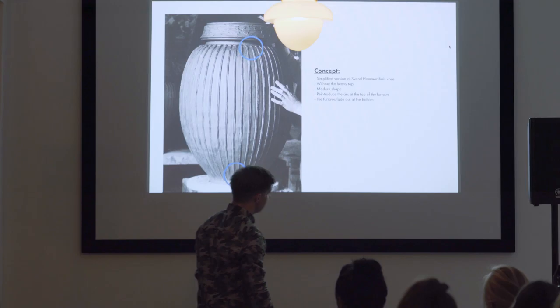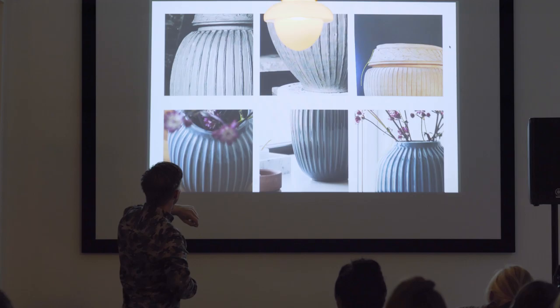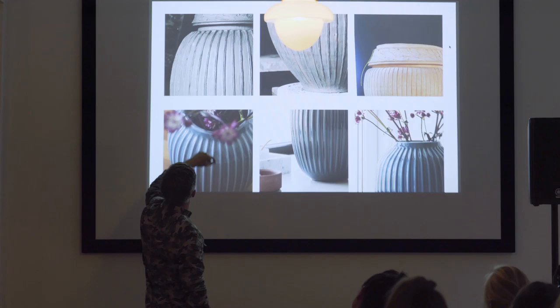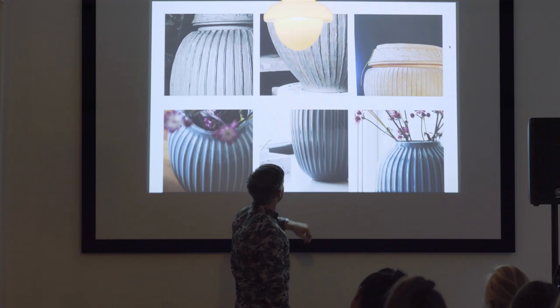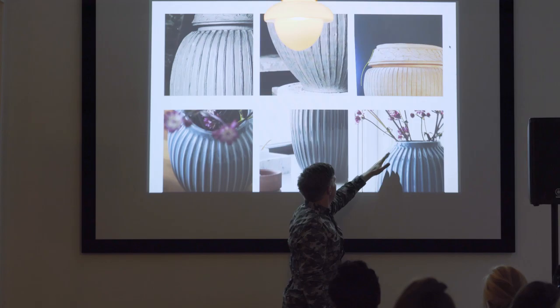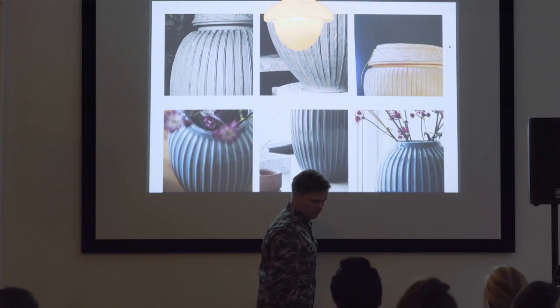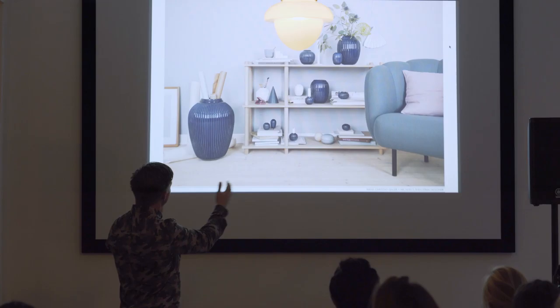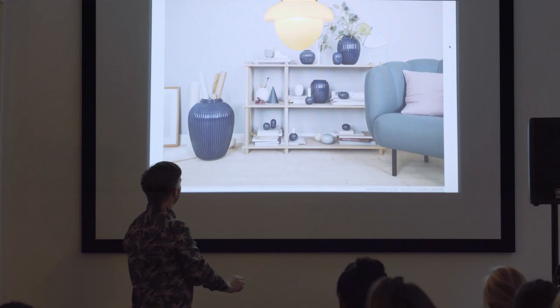I noticed the vase had arcs between the furrows — a detail I hadn't used on the tableware but really wanted to use on the vase. In the one-to-one reinterpretations you can see I kept the arcs but in a simpler way. He also has double furrowing on his vases, and down at the bottom the fading out is the same. Up top, instead of cutting it off bluntly, I hinted at the old top with a line. The vases eventually grew into many different sizes, all different shapes modeled around the same theme, plus some candle holders.